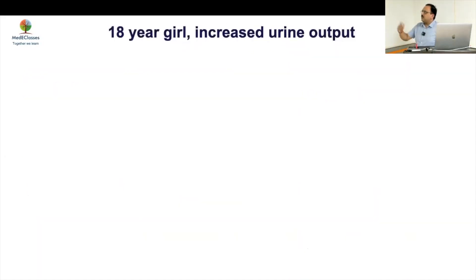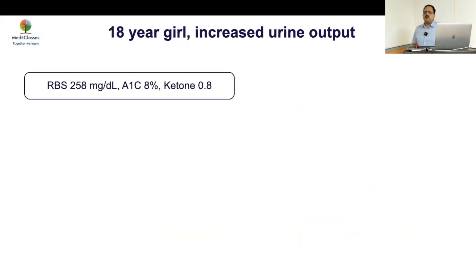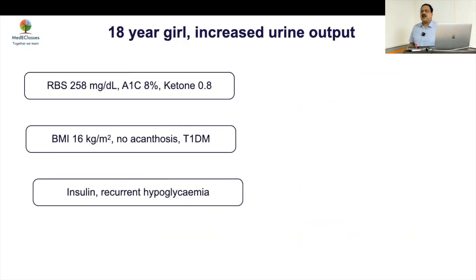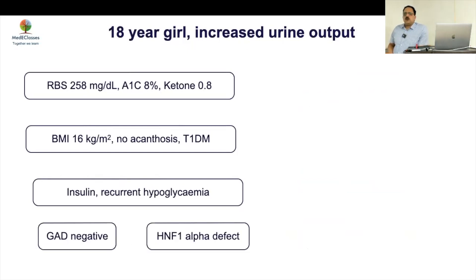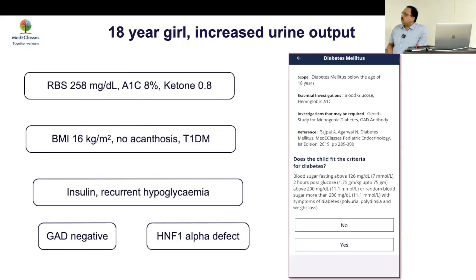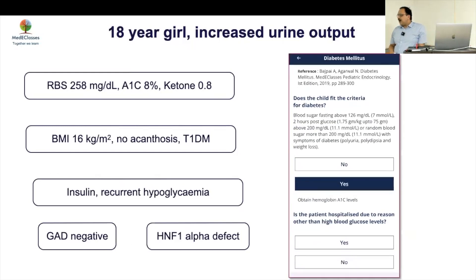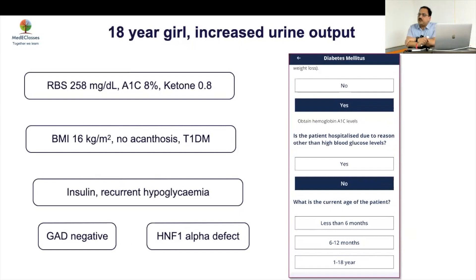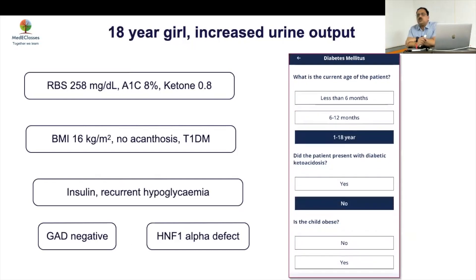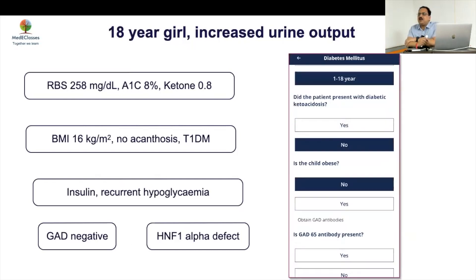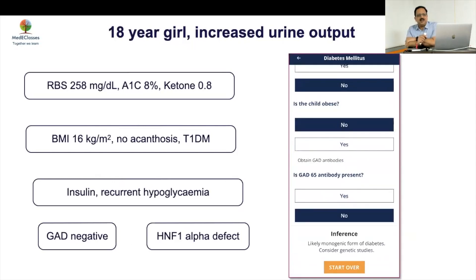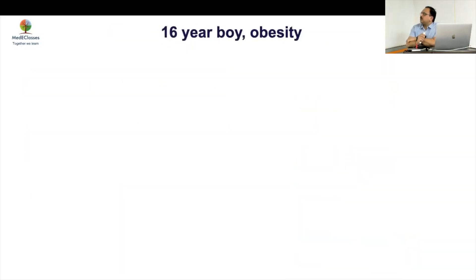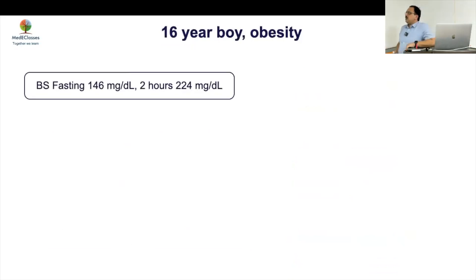Second case: 18-year-old girl with increased urine output, labeled as type 1 diabetes even though there was no DKA and she was lean. GAD was negative and she turned out to be a MODY form. In someone without DKA who is non-obese, the key parameter is GAD antibody — if negative, go for MODY genetic testing, which becomes important in that setting.